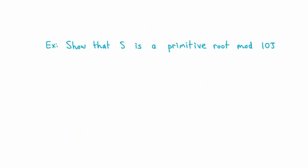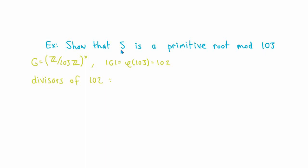Now let's look at an example. In the video where we talked about primitive roots, we mentioned without proof that 5 is a primitive root modulo 103. Now that we have Lagrange's theorem and its consequences, let's show that 5 is a primitive root modulo 103. To say 5 is a primitive root modulo 103 means 5 is a generator for the group ℤ/103ℤ×. Since 103 is prime, the order of that group is 102. We need to show the order of 5 in this multiplicative group is 102. We know the order of 5 must be a divisor of 102, so we factor 102 as 2 times 3 times 17.